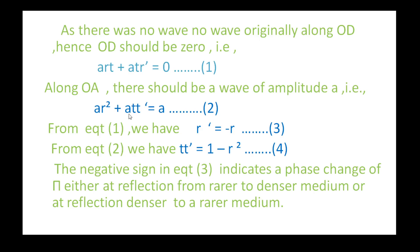This summation is equal to A. From this equation, ART is equal to minus ATR-prime; both sides: A and T cancel. Then, R-prime is equal to minus R. Also, A into (R-squared plus TT-prime) is equal to A. After cancelling A from both sides, R-squared plus TT-prime equals 1, so TT-prime is equal to 1 minus R-squared.